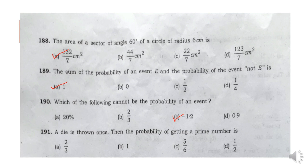Question 191: A dice is thrown once. Then the probability of getting a prime number is Option A: 2 by 3.